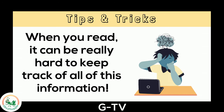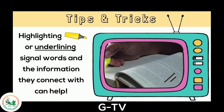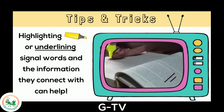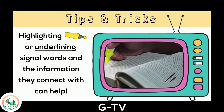When you read, it can be really hard to keep track of all of this information. Highlighting or underlining signal words and the information they connect with can really help. Then it becomes easier to figure out the text structure.